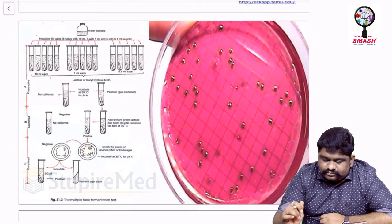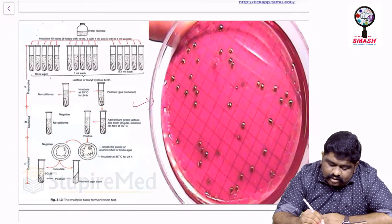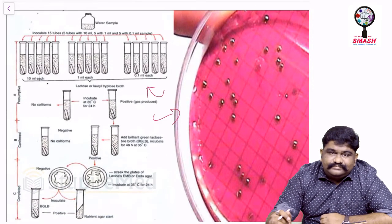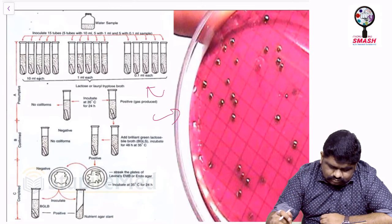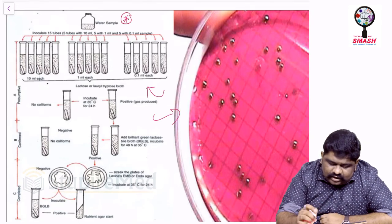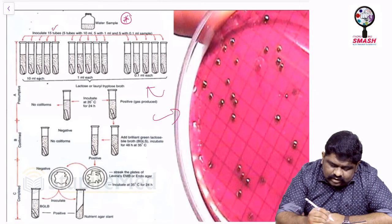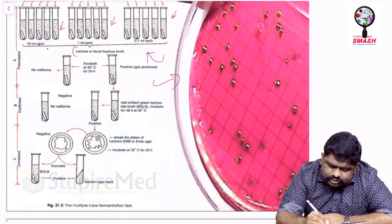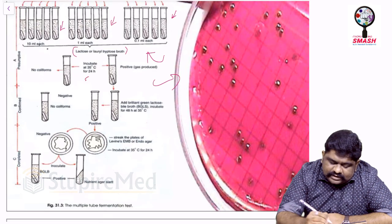Now look at this culture medium picture. We take a water sample and inoculate 15 tubes: 0.1 mL in one tube, 1 mL in another, and 10 mL in a third. From there, you inoculate onto Lactose or Laurel Tryptose broth, then incubate at 35°C for 24 hours.